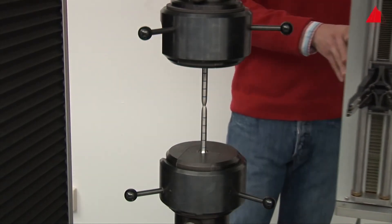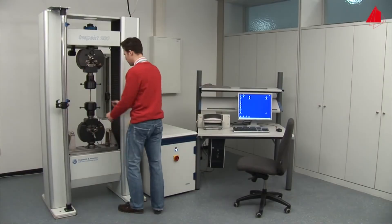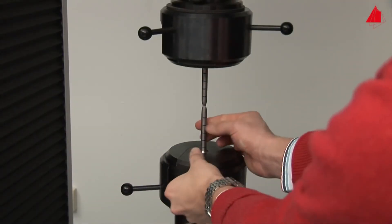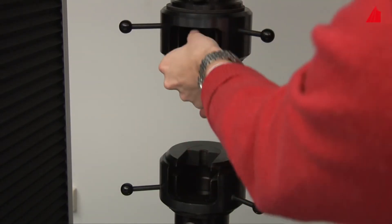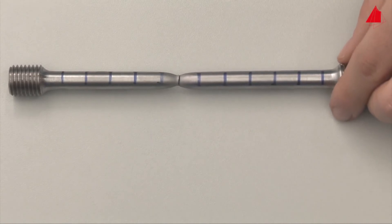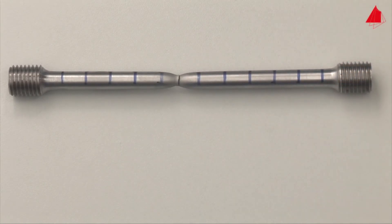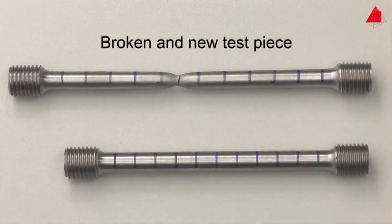In the last step, the tester swings the extensometer back into its resting position and removes the broken test piece. On the work table, he puts the fragments back together again. With the help of the distance marks, the percentage elongation after fracture can be determined. This is the permanent strain after fracture and amounts to about 30 percent in this example.